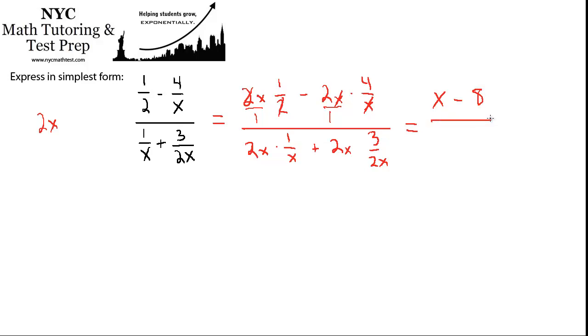In the denominator, we have 2x times 1 over 1 times x. So that's going to be 2x over x, which is just 2.